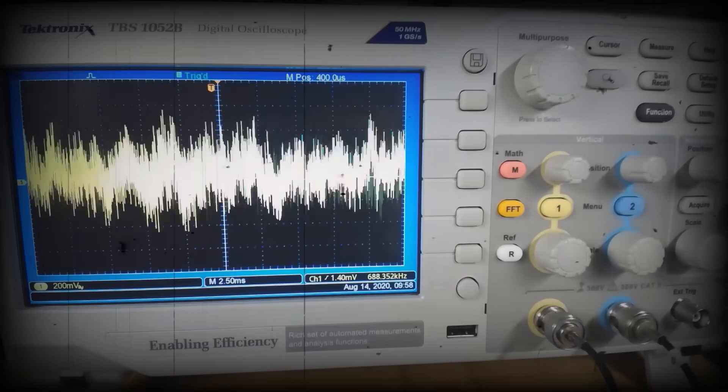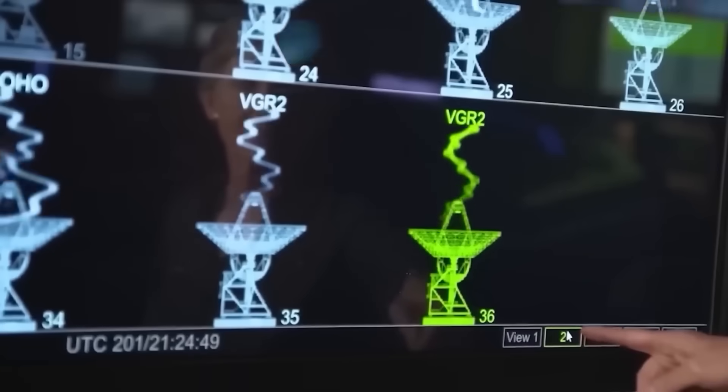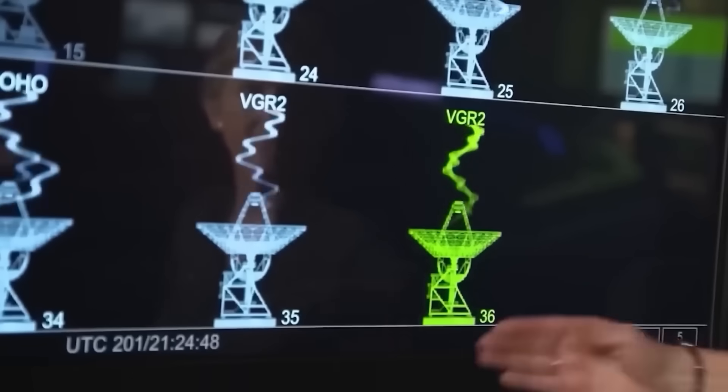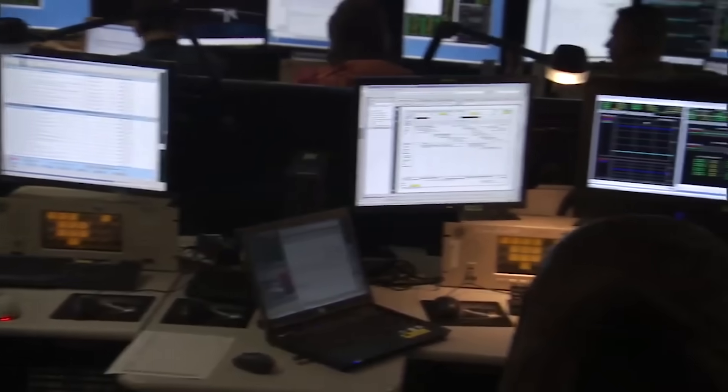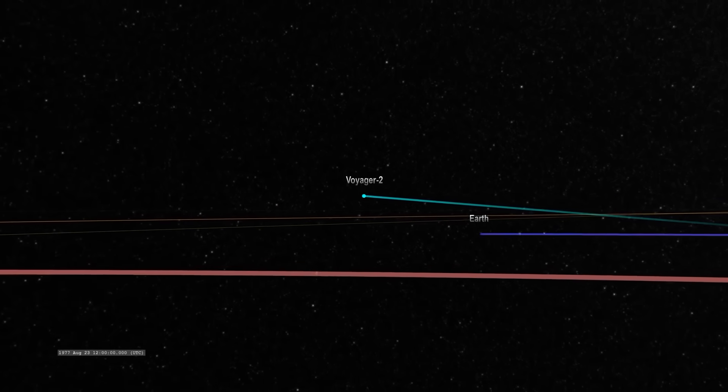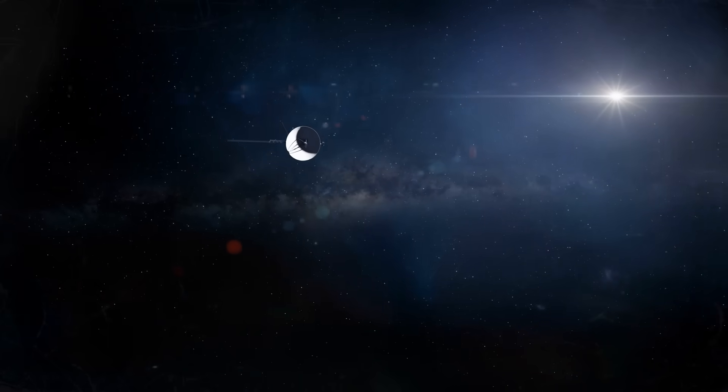By measuring the tiny differences in the signal's arrival time at each station, they could triangulate its source with incredible precision. The result was unthinkable. The source wasn't stationary. It was moving along a path almost perfectly parallel to Voyager 2's trajectory. It was tailing our spacecraft.